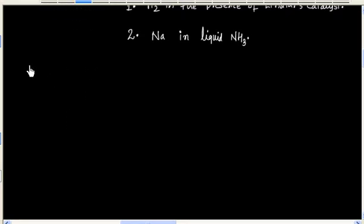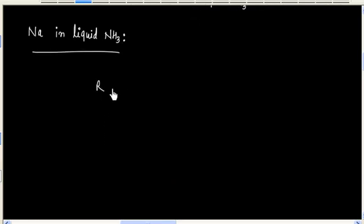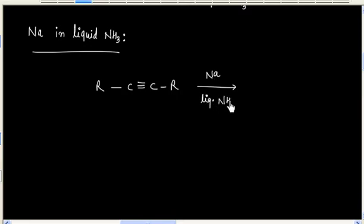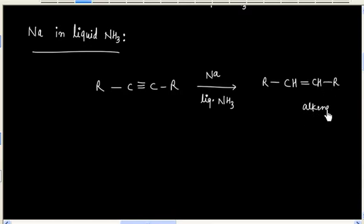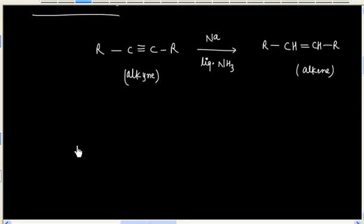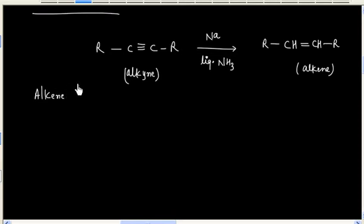Now let us discuss about the second reagent, that is sodium in liquid ammonia. So if an alkyne is treated with sodium in liquid ammonia, we will have an alkene.